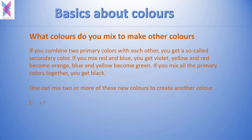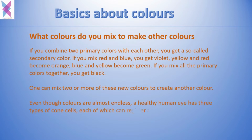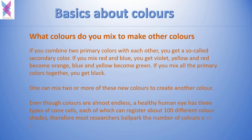Even though colors are almost endless, a healthy human eye has three types of cone cells, each of which can register about one hundred different colors. Most researchers ballpark the number of colors we can distinguish at around one million colors.